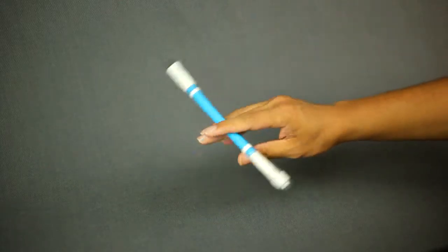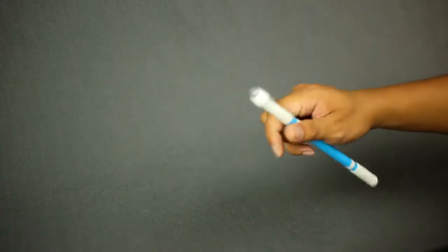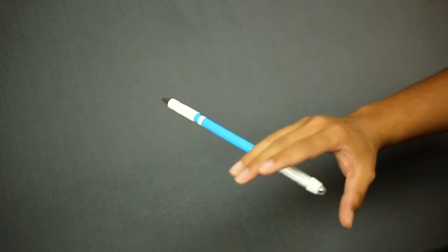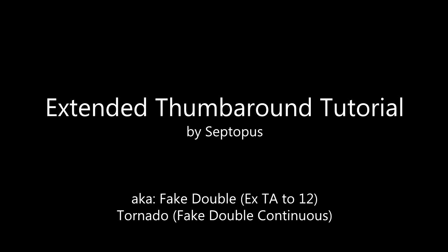If you can catch it in the 1-2 slot, try to catch it in all the other slots. And that's how you do an extended thumb around.